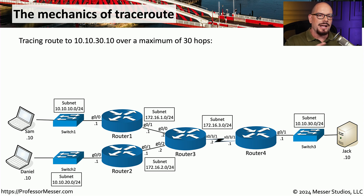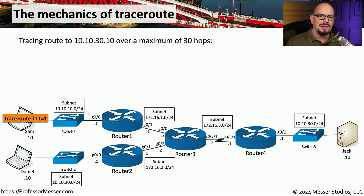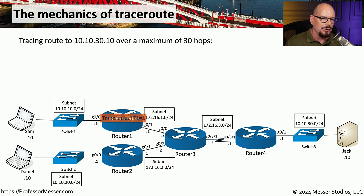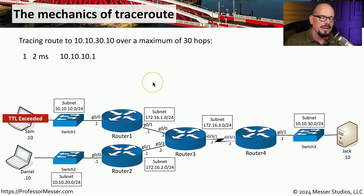We're going to run a traceroute, but first I want to show you what's happening behind the scenes. In this example, we're running a traceroute from Sam's machine through multiple routers to Jack's workstation. The very first message sent from Sam's computer has a TTL set to one. When this frame reaches the first router, that router decreases the TTL by one, making it zero — meaning the time to live has been exceeded. A message is sent back to Sam's computer reporting the TTL was exceeded, identifying the 10.10.10.1 router, reached in two milliseconds.